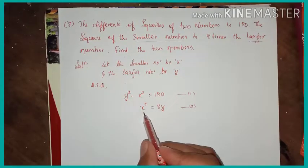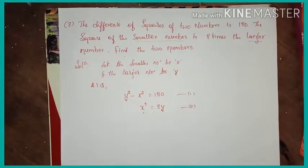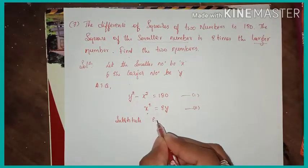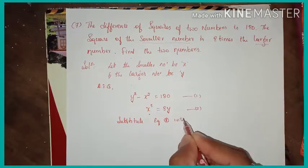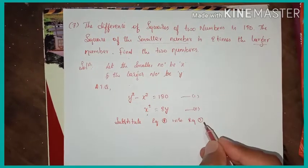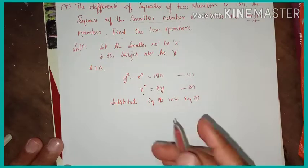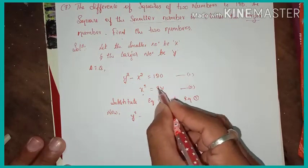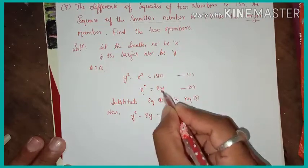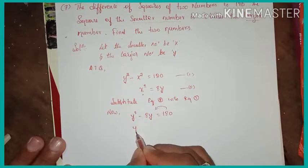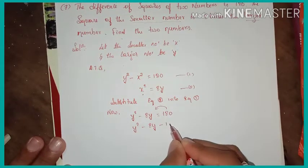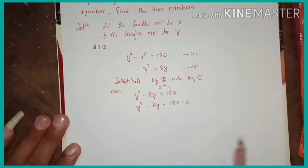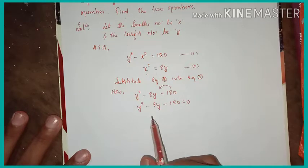Substitute equation 2 into equation 1, because we need only one variable. Equation 1 becomes y squared minus x squared, and since x squared equals 8y, we write 8y equals 180, which gives y squared minus 8y minus 180 equals 0.